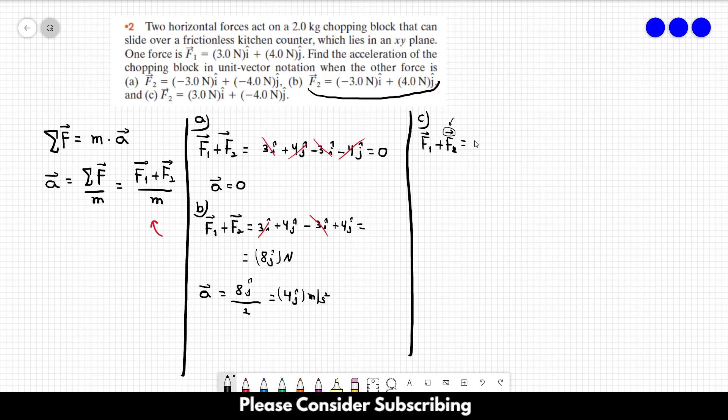So F1 is three in the i direction plus four in the j direction plus three in the i direction minus four in the j direction. And this gives us six in the i direction and it is in newtons. So the acceleration for letter C would be six in the i direction over two, which gives us three i meters per square second. And that's it.